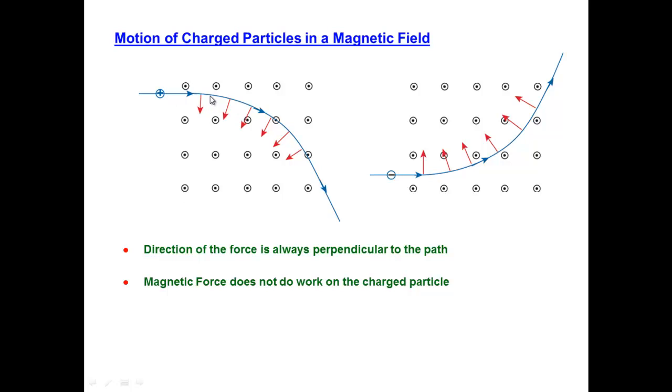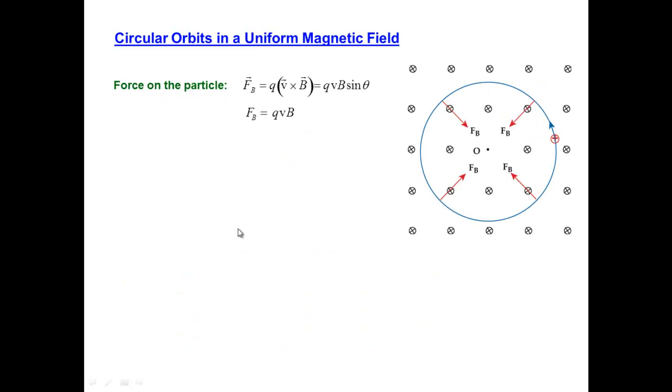This acceleration that the particle encounters is kind of a special one. It doesn't change the magnitude of the velocity vector, but it does change the direction. You might remember that this was exactly how we defined circular motion. Uniform circular motion is where the acceleration is always directed perpendicular to the path, and the speed doesn't change. Magnetic force does not change the speed of the particle, but just the direction. Now let's move on to analyze this problem quantitatively.